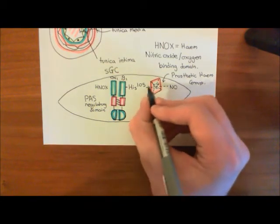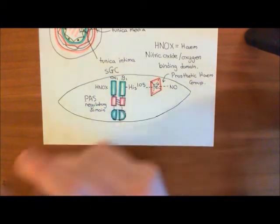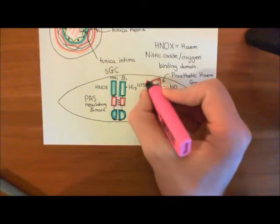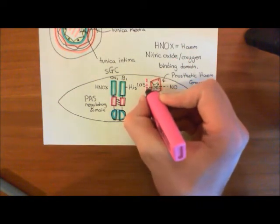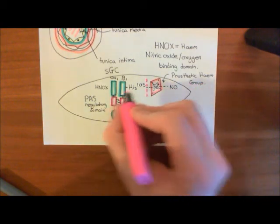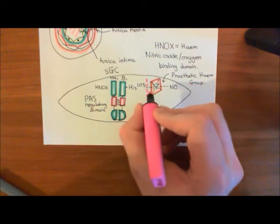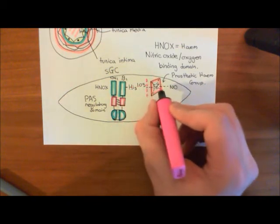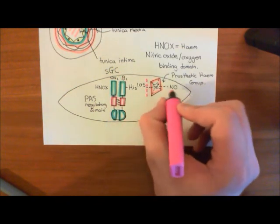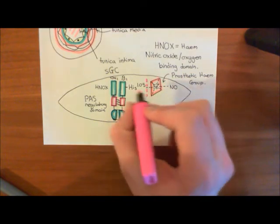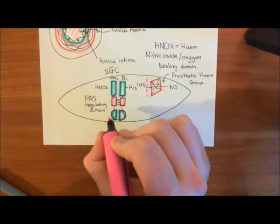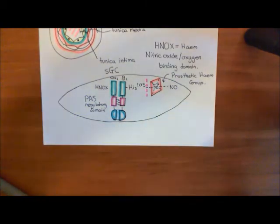Now, when nitric oxide forms that sixth coordinate bond, it causes this fifth coordinate bond between the histidine at position 105 and the ferrous cation to break apart, basically. So, what happens is this prosthetic heme group breaks off the soluble guanylate cyclase and goes off with the nitric oxide. And now, that leads to the activation of this soluble guanylate cyclase enzyme.